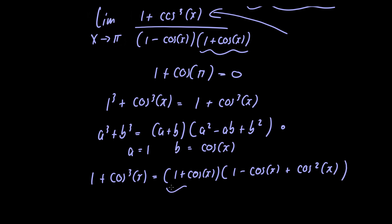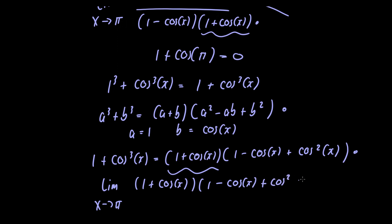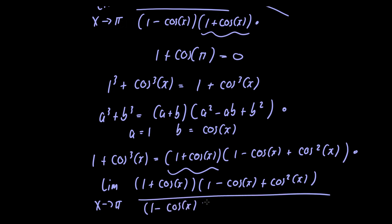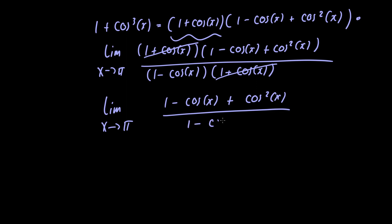Notice we have a factor of 1 plus cosine of x, which will allow us to cancel with the 1 plus cosine of x in the denominator. So let's rewrite the limit: we have the limit as x approaches pi of 1 plus cosine of x multiplied by 1 minus cosine of x plus cosine squared of x, divided by 1 minus cosine of x multiplied by 1 plus cosine of x. Now we can cancel these two factors, leaving the limit as x approaches pi of 1 minus cosine of x plus cosine squared of x divided by 1 minus cosine of x.